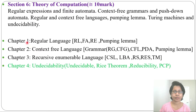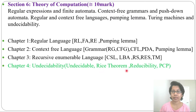Till now I finished chapter 1, chapter 2, and chapter 3 — that is regular language, context-free language, and recursive enumerable language. Let's discuss chapter 4, that is undecidability. Here I will cover what is undecidable, Rice's theorem, reducibility, and PCP. PCP stands for Post Correspondence Problem. Let's start with undecidable.